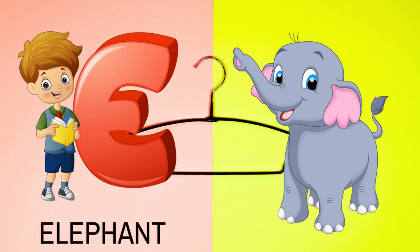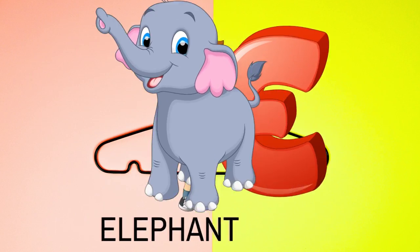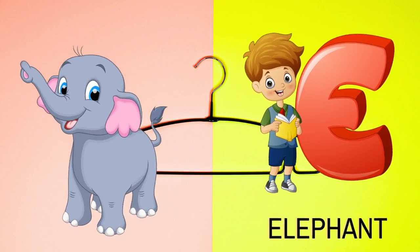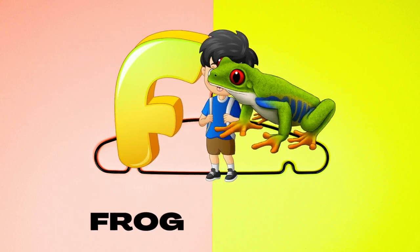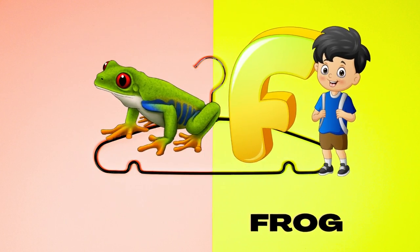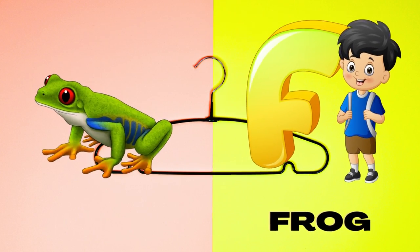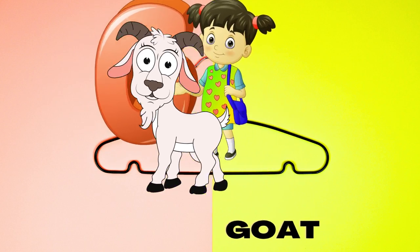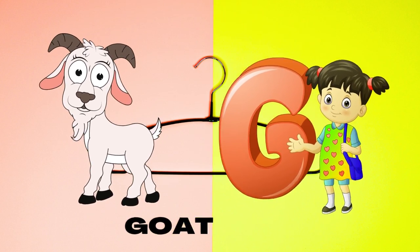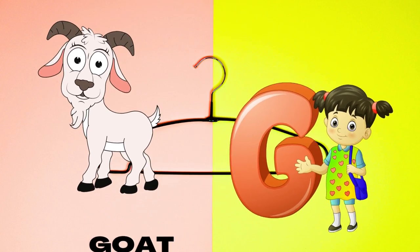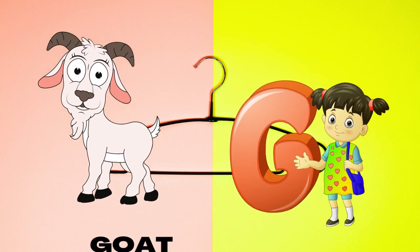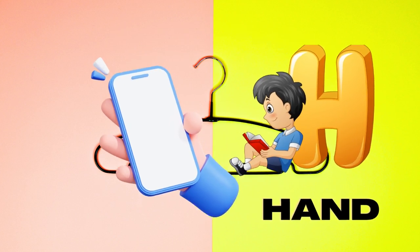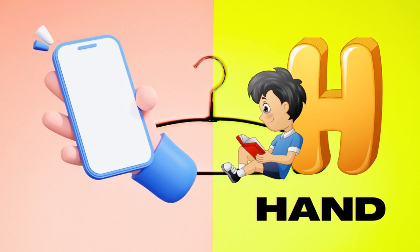E is for elephant, e-e-elephant. F is for frog, f-f-frog. G is for goat, g-g-goat. H is for hand, h-h-hand.